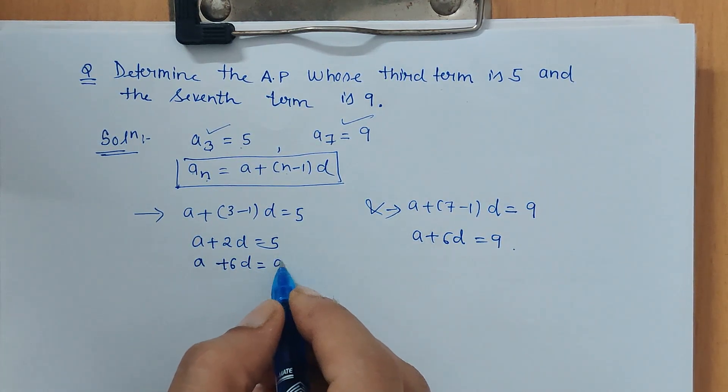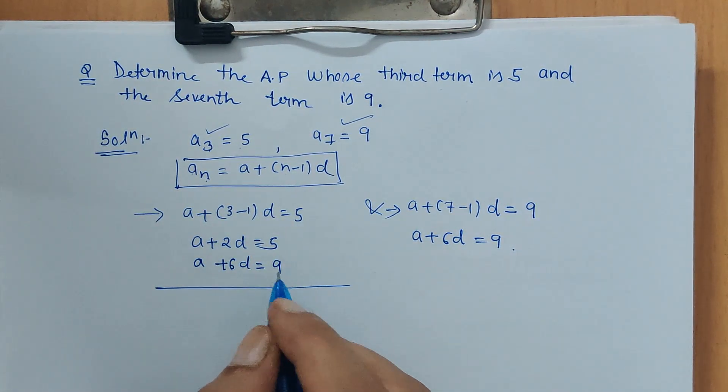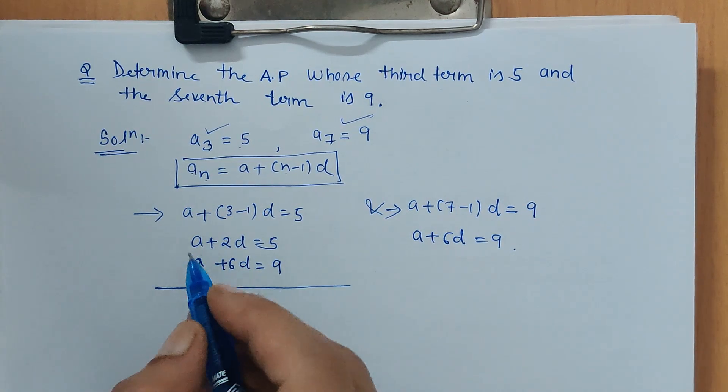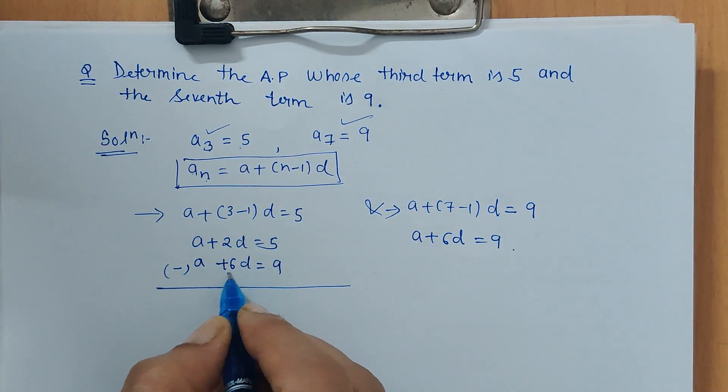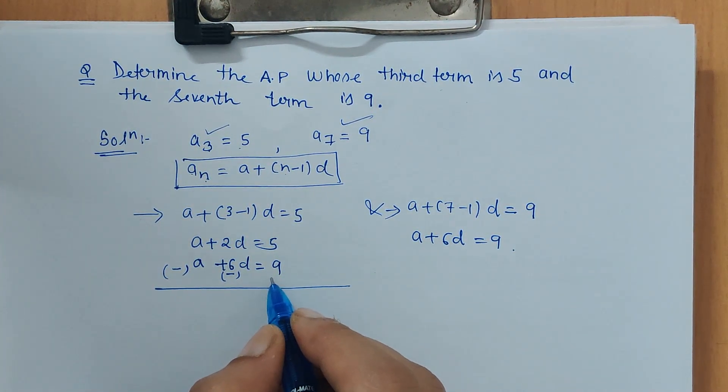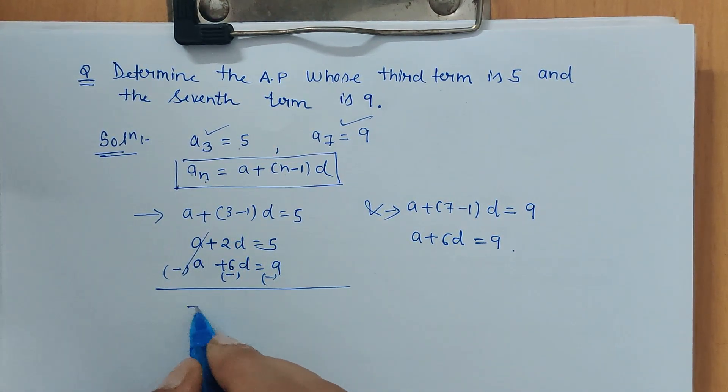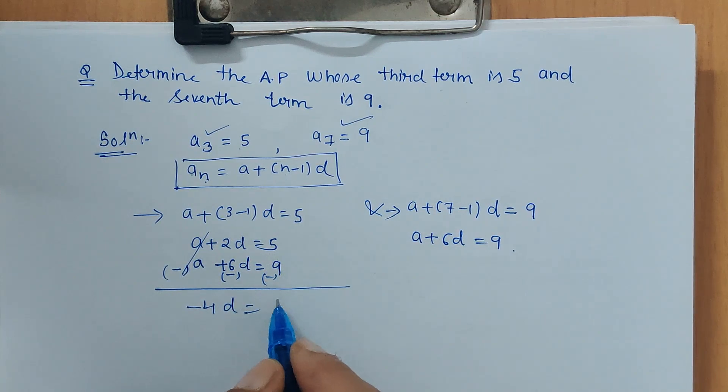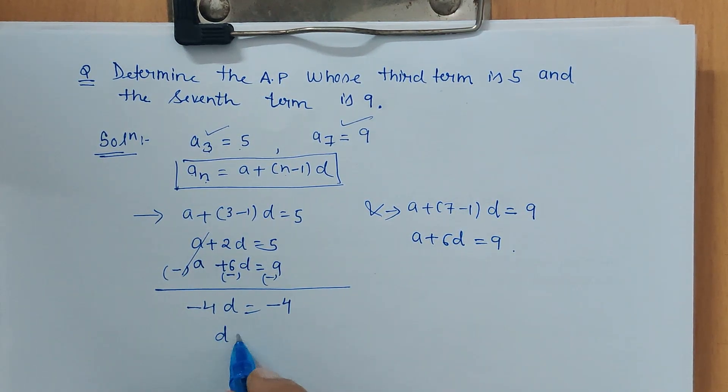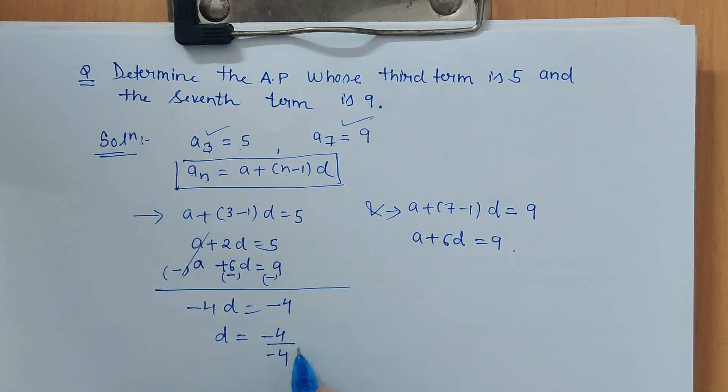In pair of linear equations in two variables, we have already seen the elimination method. Just multiply one of the equations by a negative sign and this gets cancelled. 2 minus 6 is minus 4d, and 5 minus 9 is minus 4. So the common difference obtained is minus 4 upon minus 4, which is 1.